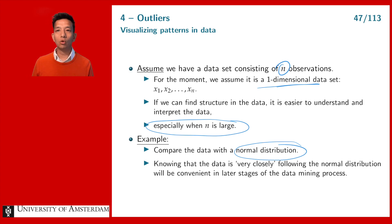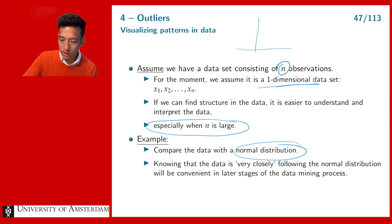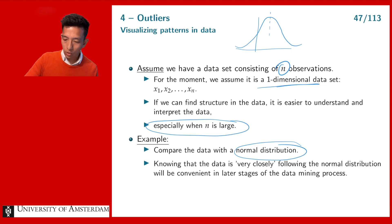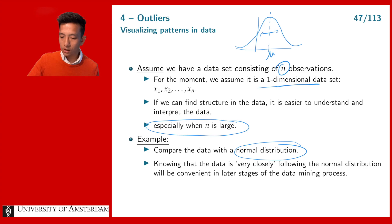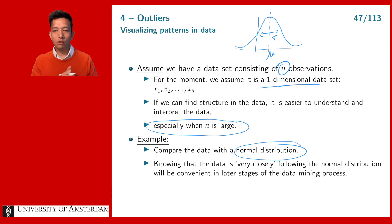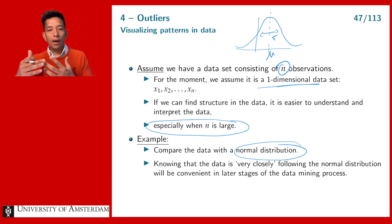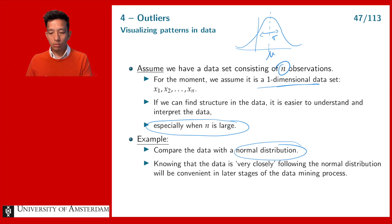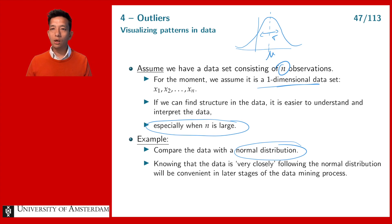A normal distribution is a distribution that has a characteristic bell shape. To understand a normal distribution we only need a mean — we call that mu — and a standard deviation sigma. So if we have a data set with one thousand observations but we can summarize it with a normal distribution, we can use only two parameters, mu and sigma, that capture the whole data set.